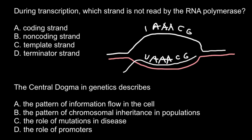There is only one exception: when we have uracil in the mRNA, we are going to have thymine in the DNA, because thymine in DNA is replaced with uracil in messenger RNA. The messenger RNA grows in this direction, so this end is going to be the five prime end. On the coding strand of the DNA we have three prime here and five prime here.